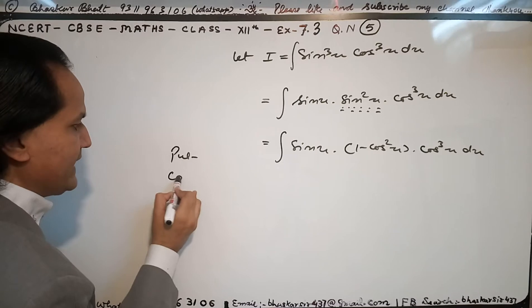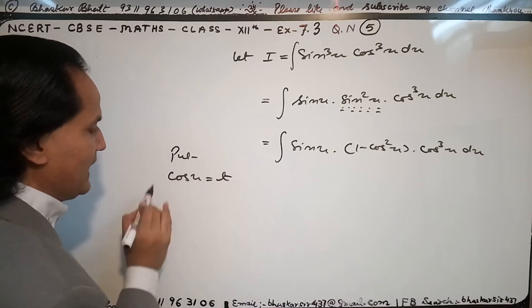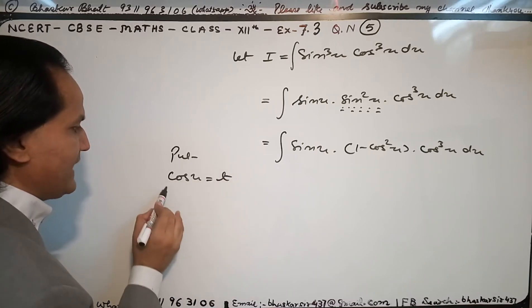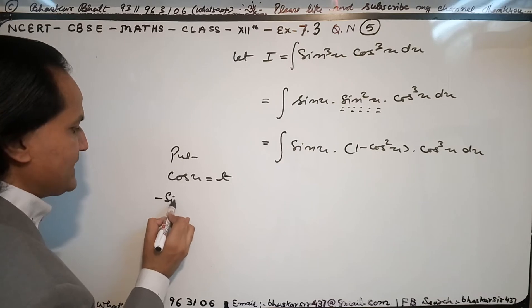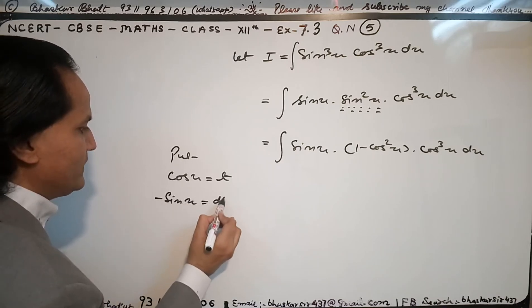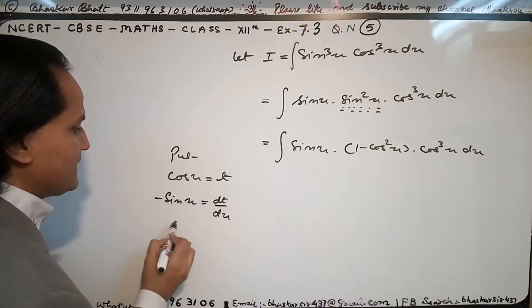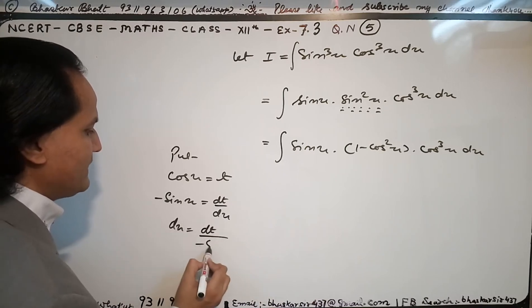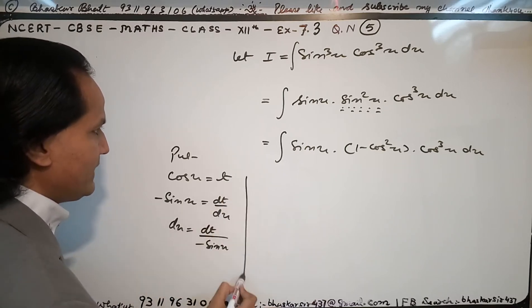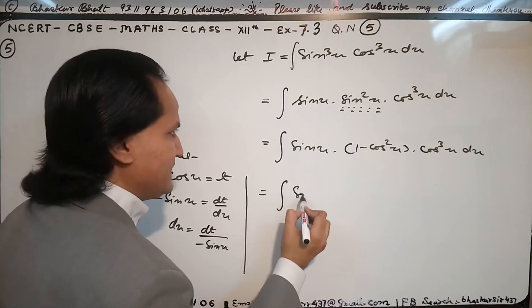Differentiate both sides with respect to x. I will find minus sine x equals dt by dx, which means dx equals dt by minus sine x. Okay, now in place of dx...